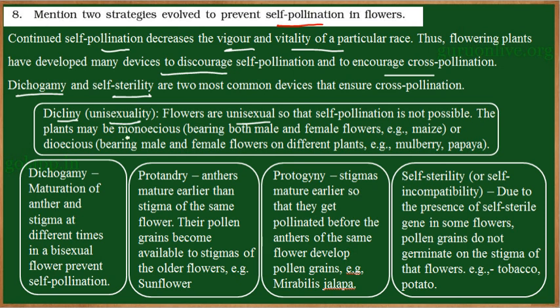These plants can either be monoecious or dioecious. Monoecious plants have both male and female reproductive structures present in the same plant, but the flowers can be unisexual. Maize is an example of a monoecious plant — it produces either male flowers or female flowers. Dioecious plants will have either only male flowers or only female flowers, but not both together. Papaya is one example — a papaya plant can be a male plant or a female plant, producing either staminate or pistillate flowers.